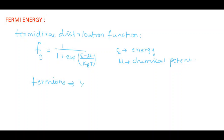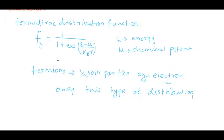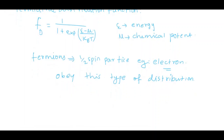The particles called fermions obey the Fermi-Dirac distribution. Fermions are half-spin particles. A well-known example is the electron — electrons obey this type of distribution. Next, I am going to draw this function as a graph.